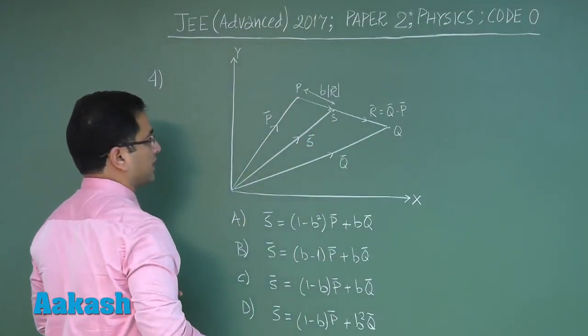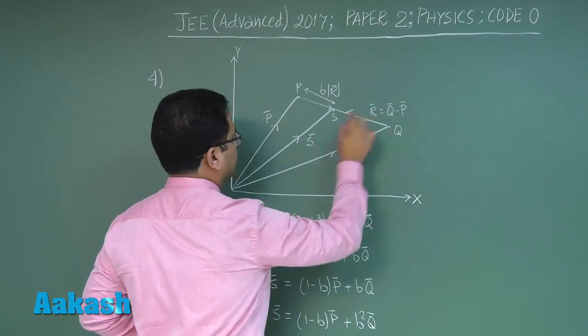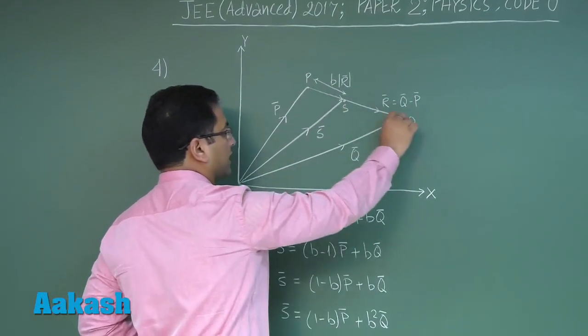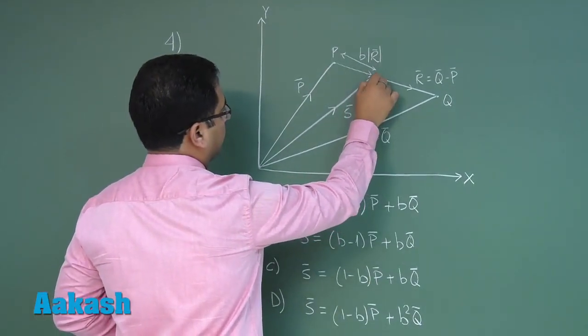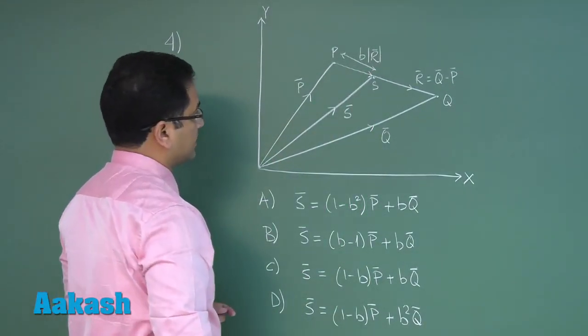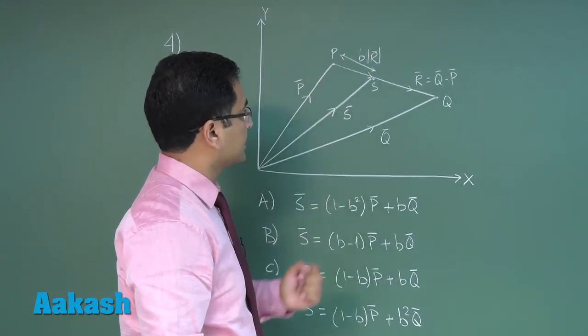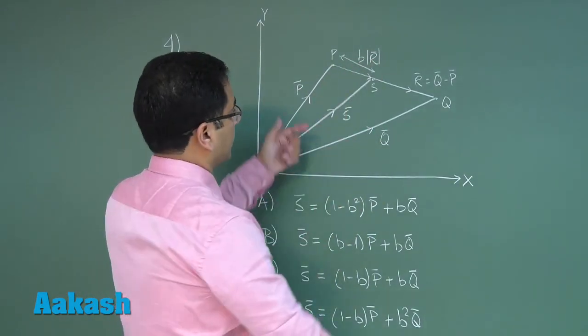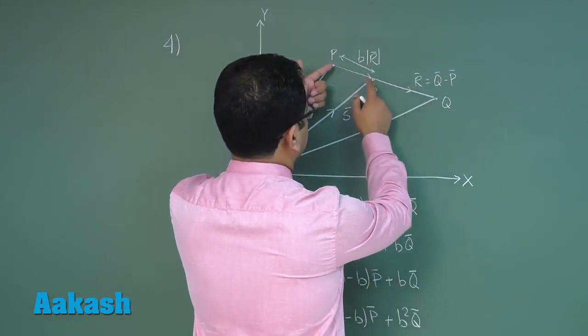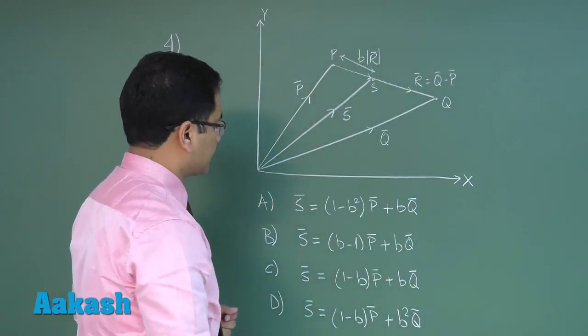If this is given, r vector is q vector minus p vector, meaning the whole vector is r vector. There's a point here named S, and this length is given as b, which is a scalar value multiplied by the magnitude of r. If this is b times magnitude of r, quite obviously b would be less than one.